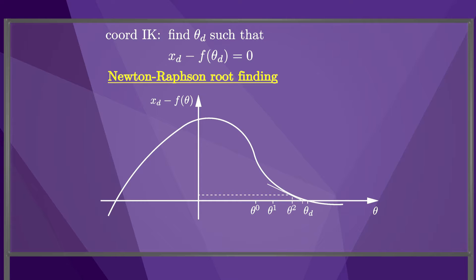If our initial guess theta-0 had been to the left of the plateau in the function x-d minus f of theta, then the iterative process may have converged to the root on the left. In general, the initial guess should be close to a solution to ensure that the process converges.